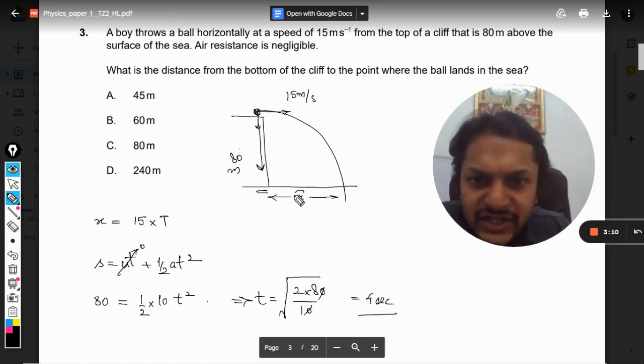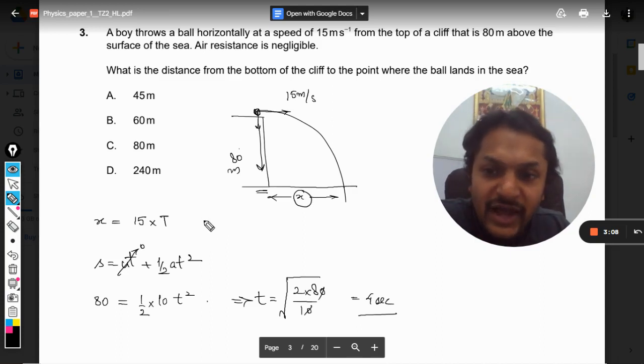And the distance horizontally that will be traveled in the 4 seconds will be given by 15 × 4, which is 60 meters.